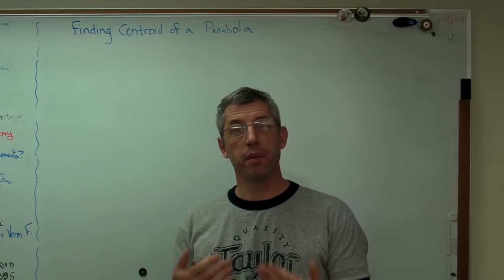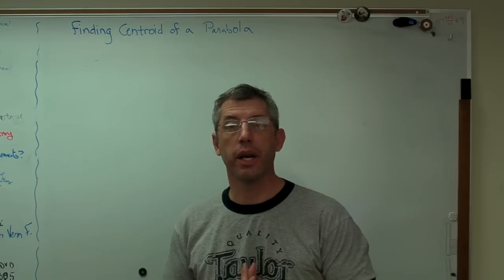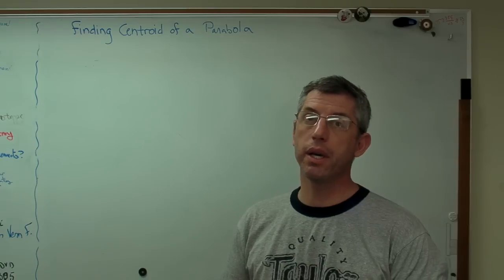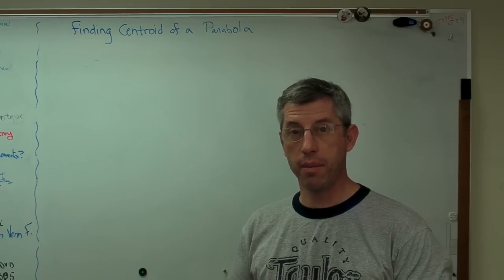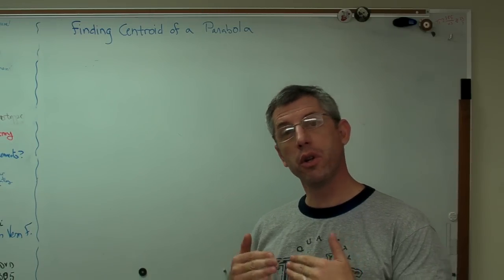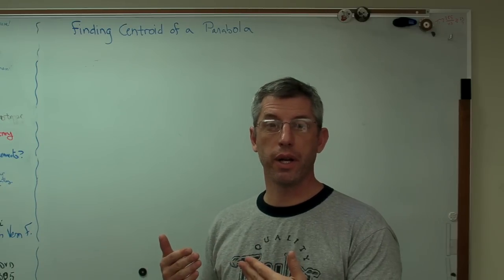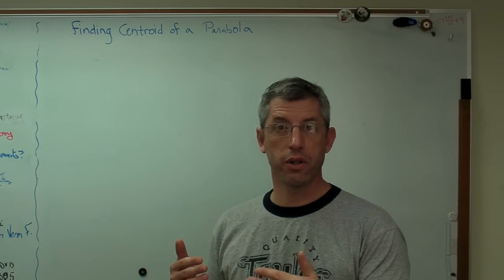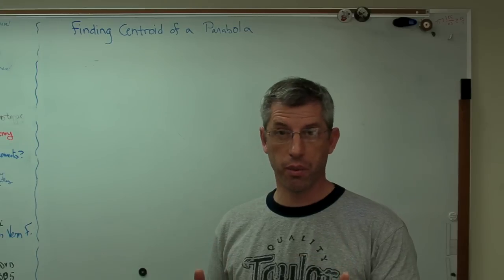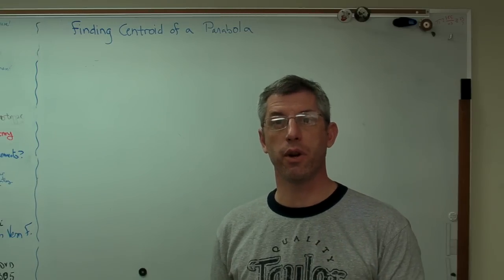Now, as a step to getting there, I'd like to start out by showing you how to find the centroid of a semicircle, only because that number is tabulated and it's easy to check to see if we got the right answer. So I'm going to show you the process for finding a centroid of a general shape using the centroid of a semicircle, and then once we're sure the process works, we'll go ahead and do the centroid of a parabola.